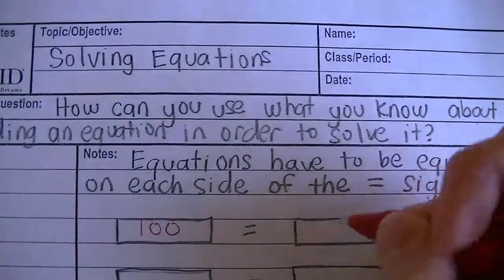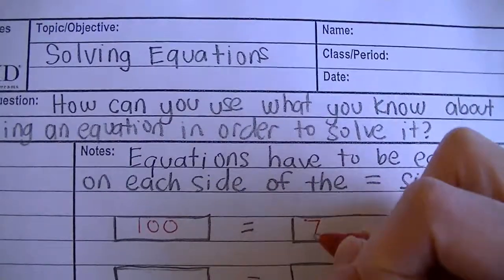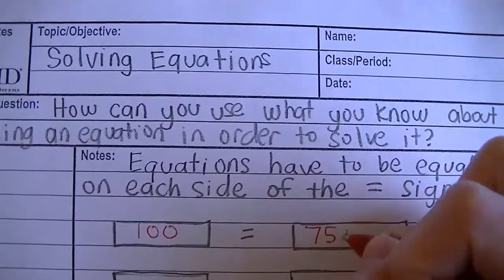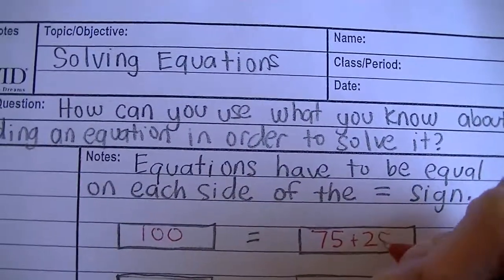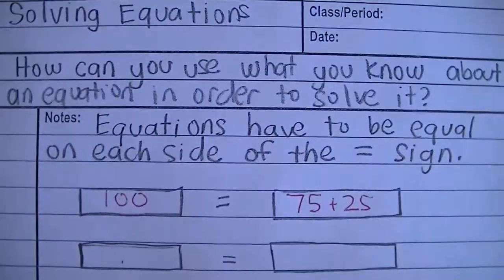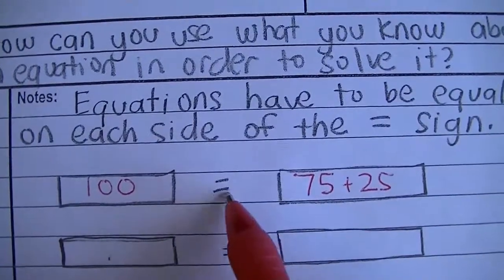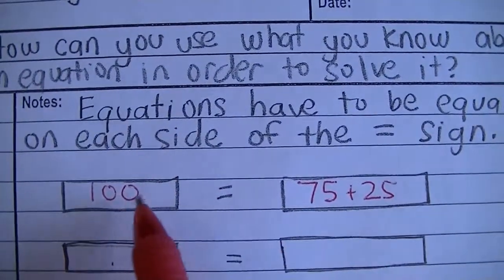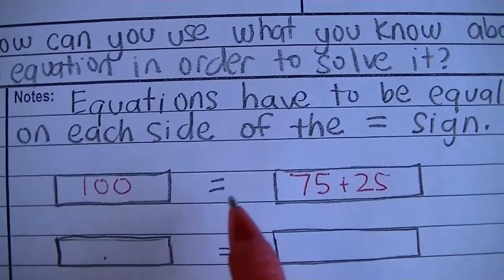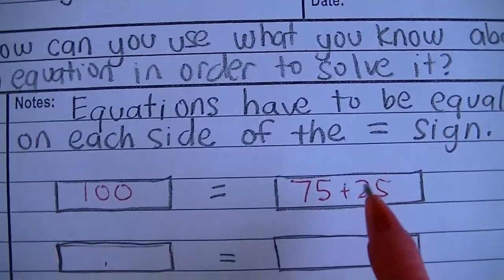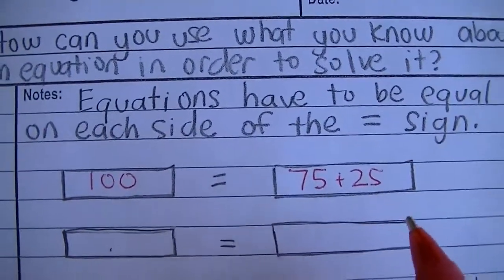For example, I could have 75 plus 25. That's really the whole definition of an equation — when there's an equal sign, one side is equal to the other side, so it's balanced.